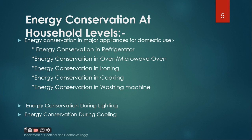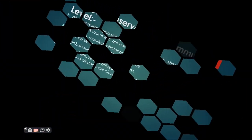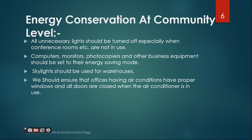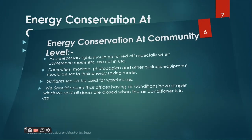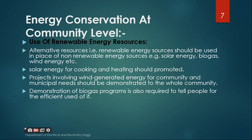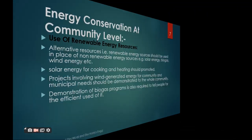At the household level, I discussed several aspects of where we can conserve energy, such as the refrigerator, microwave, ironing, cooking, washing machine, lighting, and cooling. I also discussed energy conservation at the community level, covering certain important points.